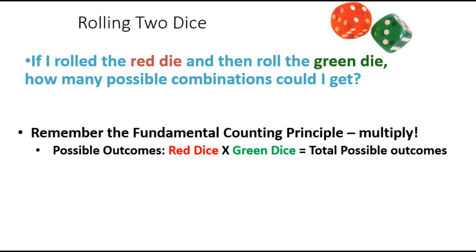But here's what it would be. Remember, using our fundamental counting principle, we're basically just going to multiply the two different combinations. Now, with the red die, I can get a total of six different options because it's one through six. Well, the green die is no different, only the color is different, that's it.